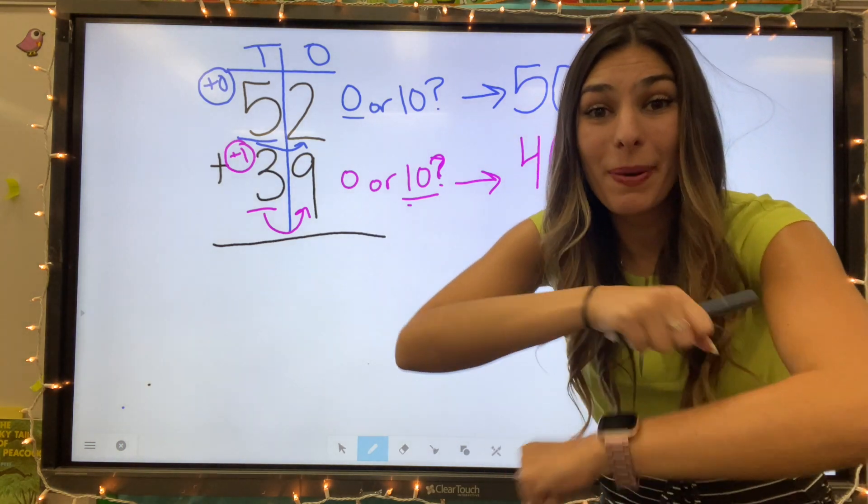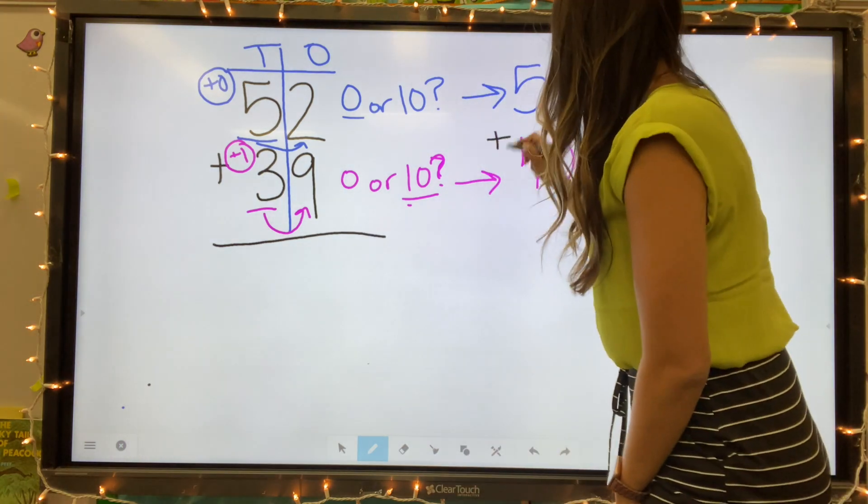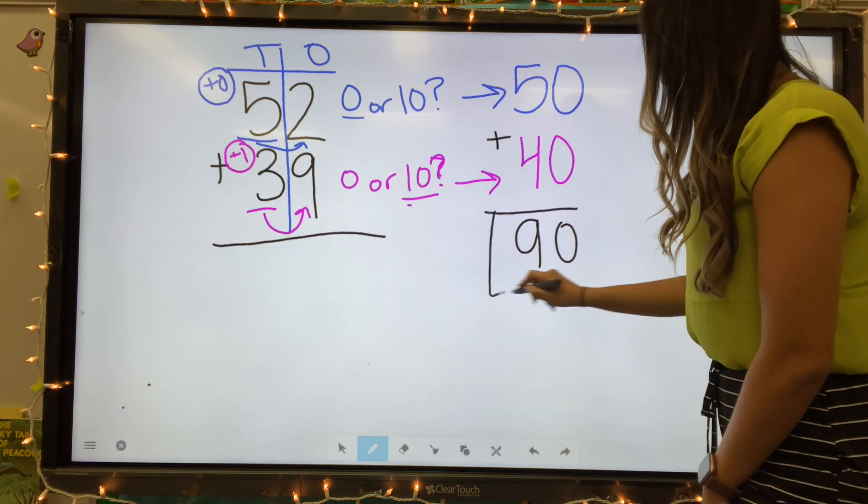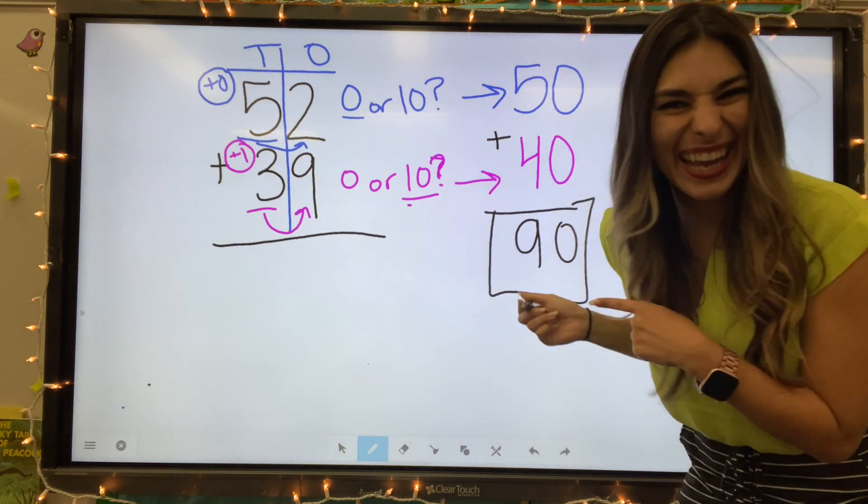So now that I've rounded my numbers, I'm ready to add. Zero plus zero equals zero. Five plus four equals nine. Our estimated number is 90.